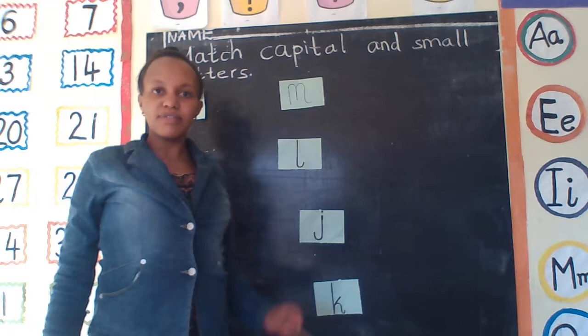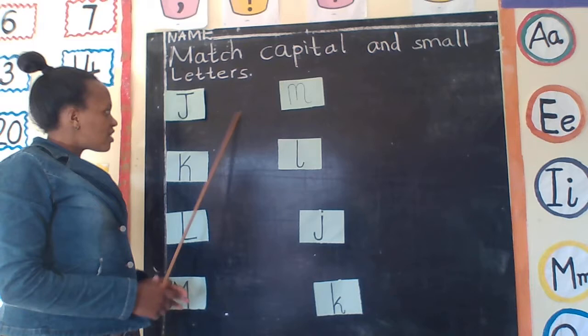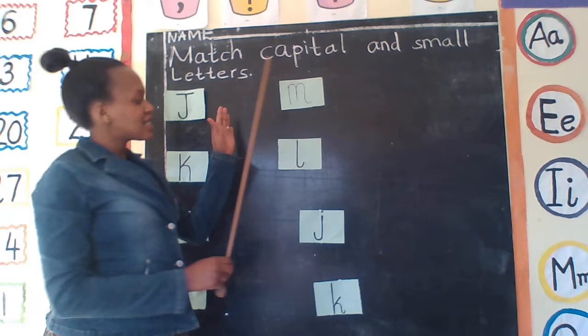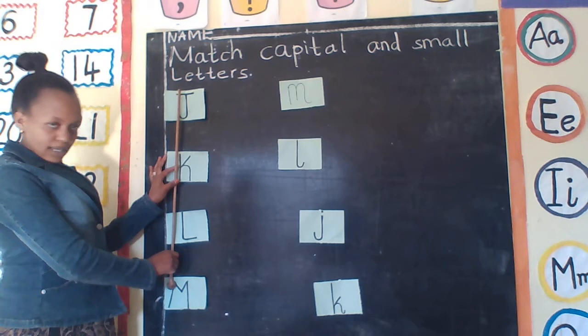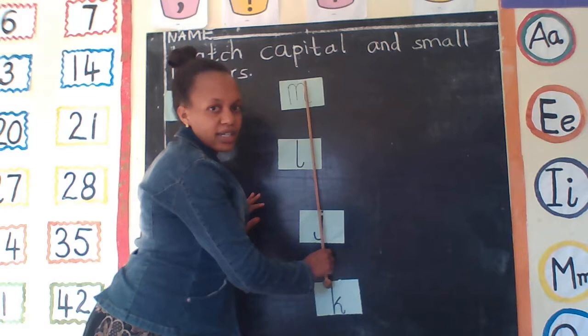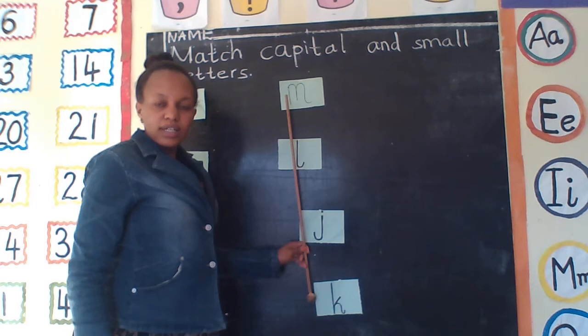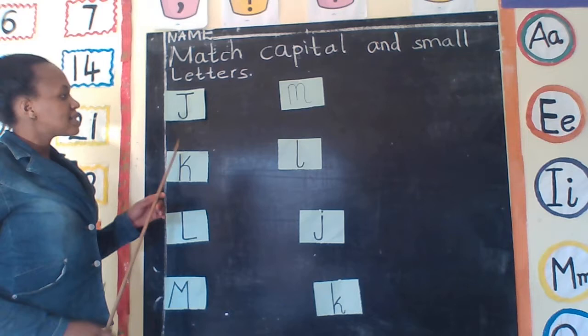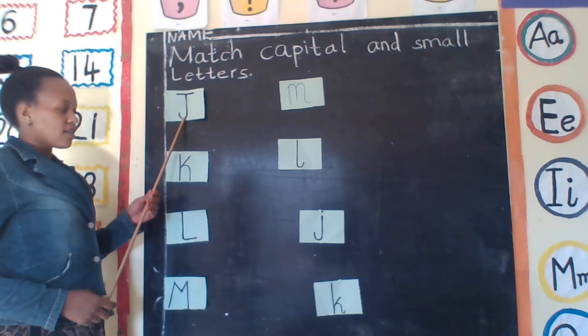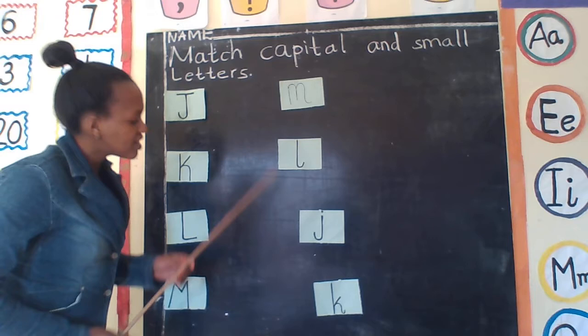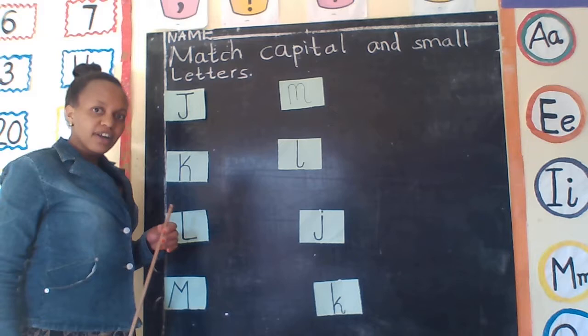My friend, listen to me and look at me very carefully, everyone. Now, we are going to match capital letter M and the small letter M. Are we together, my friend? You have to remember that this side is small letter, and this side is capital letter. Are we together? This is capital letters and this is small letters. This small letter M is also sound. Look at me. We are going to match capital letters and the small letters. Here, I have capital letter J. Do you see? This is capital letter J. I'm going to find this side where is small letter J. Are we together?